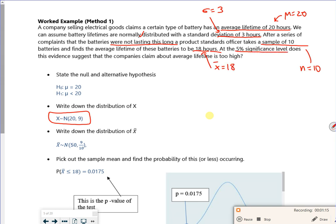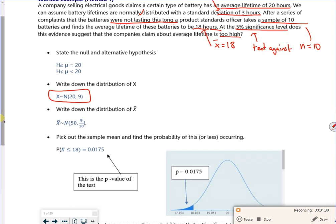At the 5% significance level, so this is what I'm going to test against, does this evidence suggest that the company's claim about the average lifetime is too high? So what we do is we set it up. We have the null hypothesis, so this one here is the null hypothesis, I'm going to put an N next to it, that says that everything is fine.